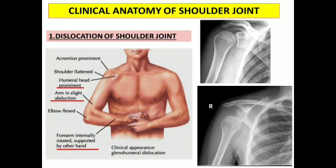Now let us enter the clinical anatomy of the shoulder — a few important clinical conditions we encounter in day-to-day practice. If you have a clear and relevant anatomical background, it will be quite easy to diagnose and manage these conditions. First, let us go through the condition called dislocation of the shoulder joint, also called glenohumeral dislocation.